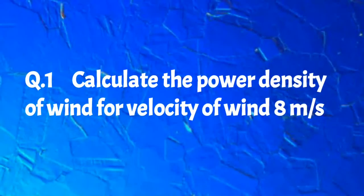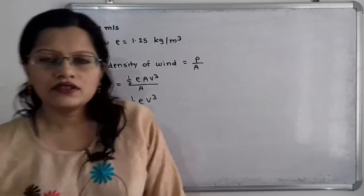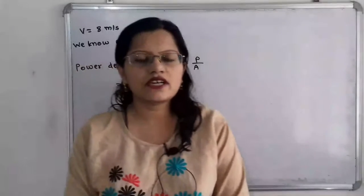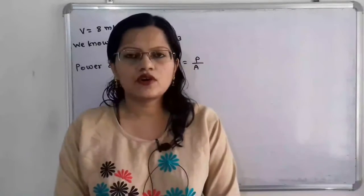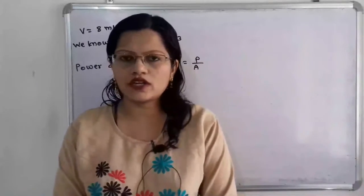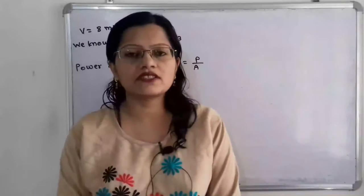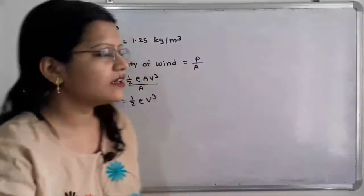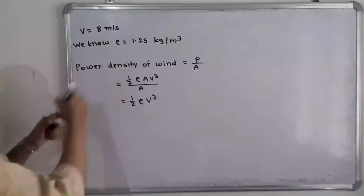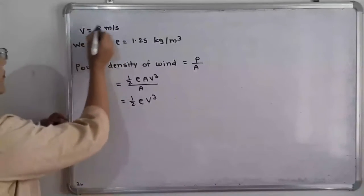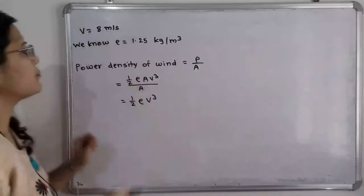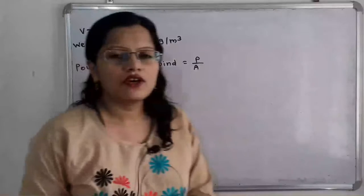The first question is: calculate the power density of wind for a velocity of the wind of 8 meters per second. So this was the given question. The given data is the velocity of the wind, which is 8 meters per second.